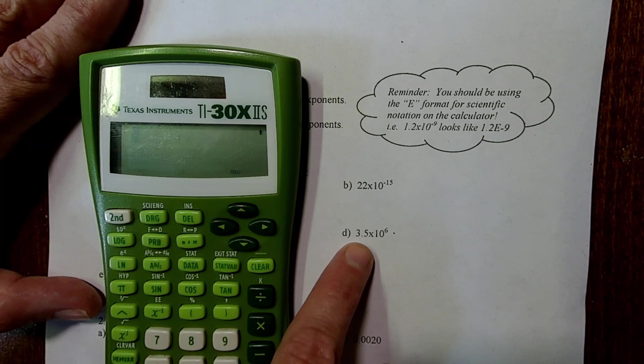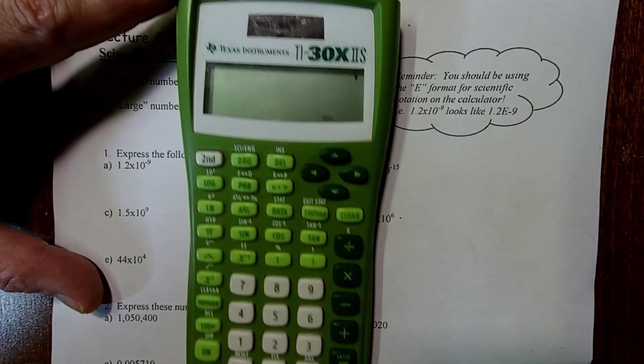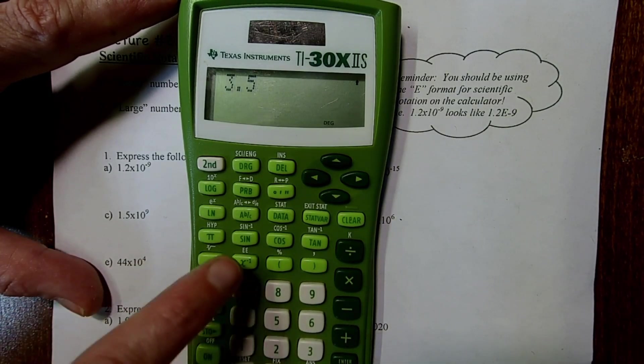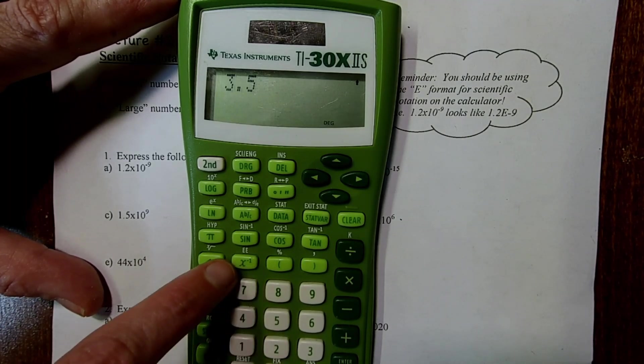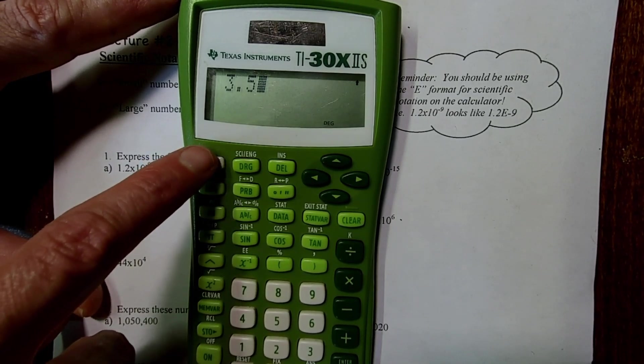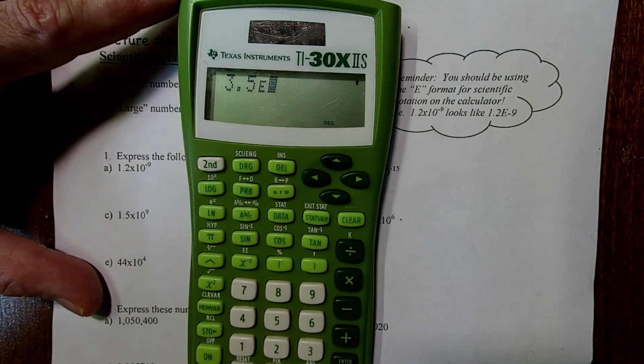So on letter D, we have the number 3.5 times 10 to the 6th. So in my calculator, I want to do 3.5, and then I know I said it's the E format, but you're looking for a double E on your calculator. On this model, it's above the X to the negative 1. So I'm going to hit 2nd, X to the negative 1, and then my E pops up.